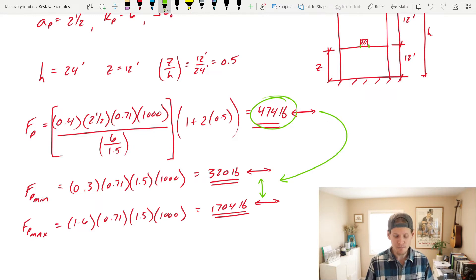If it does, you can continue to use the Fp that you've calculated. If it falls outside of those bounds, well, say if it's 1,800 pounds, well that means you only need to use a maximum of the 1,704 pounds. And if it's 200 pounds, then you need to use a minimum of the 320 pounds. But for us today, we are good to continue to use the 474 pounds.